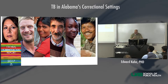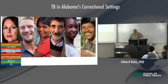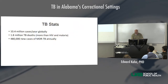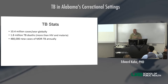From WHO, there's a Global TB Report that comes out every year — you can find it on the WHO website. There are 10.4 million cases a year globally, 1.8 million TB deaths — which is more than HIV and malaria — and 480,000 new cases of multi-drug resistant TB annually. Multi-drug resistant TB is a big concern because it's much harder to treat, requiring more toxic medications, longer treatment duration, and more costly, limited drug supply.